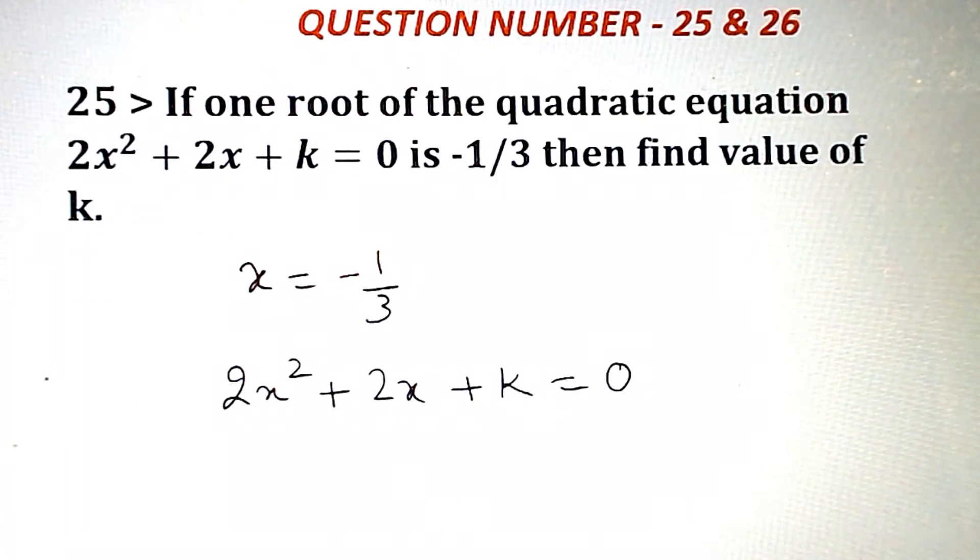2x square plus 2x plus k equals 0 equation diya hua hai. Ab is equation me x ka value ko put karenge, to 2 into minus 1 by 3 whole square plus 2 into minus 1 by 3 plus k equals 0.